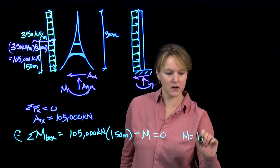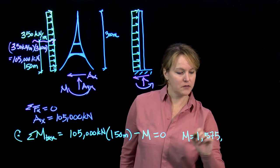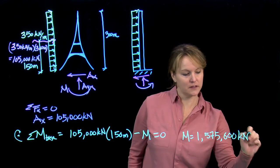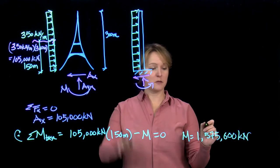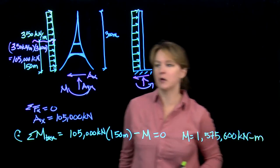And that's counteracted. The only thing counteracting it is this moment. That's why we need a moment if we need it to not rotate. Moment equals zero. I can solve for that moment. It's a large number. I have 1,575,000 kilonewtons. So when we model buildings as beams, we end up with large numbers.